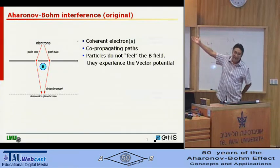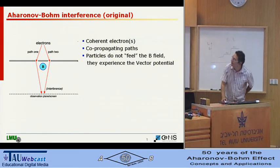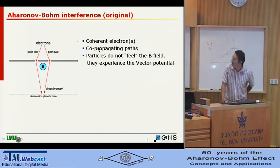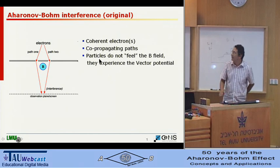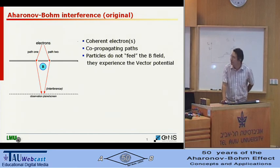This is the first picture you can find in Google. If you Google, it says that for Aharonov-Bohm, you need electrons which are coherent, the states are co-propagating, and the particles do not feel the magnetic field but they experience the vector potential.